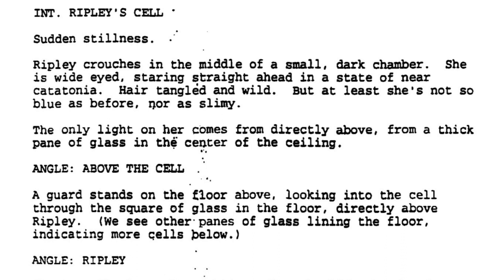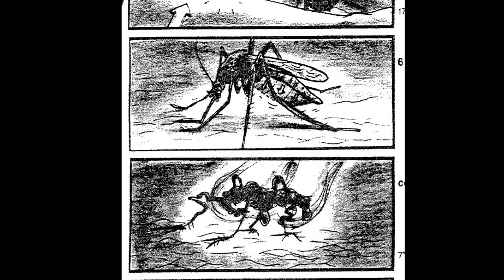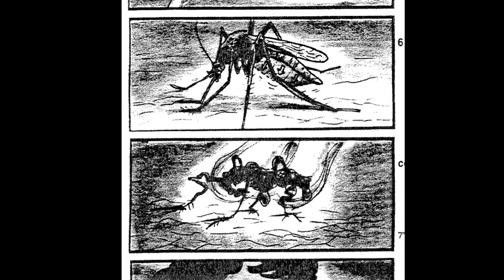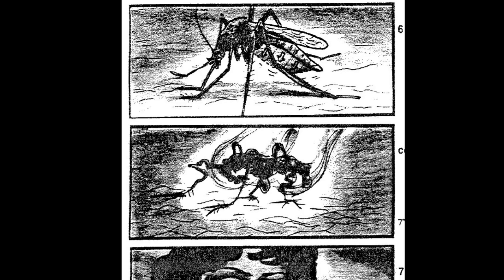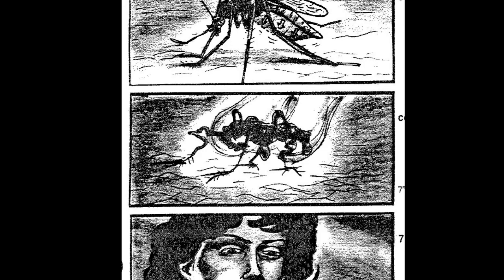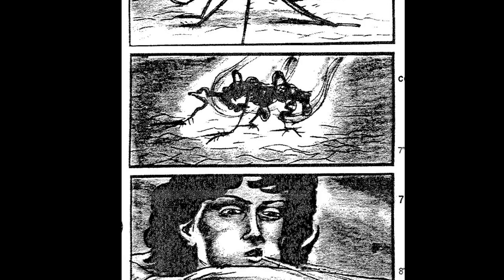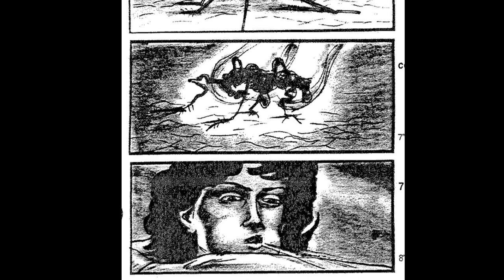While Ripley is recovering in her cell, she crouches on the floor, catatonic. An angle from above indicates more cells other than Ripley's, leaving us wondering at the occupants — the angle used in the film leaves this aspect out. This was the first scene Sigourney Weaver shot for the film, practically naked, on November 20, 1996. Not present in any of the scripts is an extension storyboarded where a mosquito lands on Ripley, starts drinking her blood, then shrivels up from the acid. Jeunet says the scene was dropped as the CGI was too expensive, and it's also a little redundant with the acid blood reveal at the end of the basketball scene.